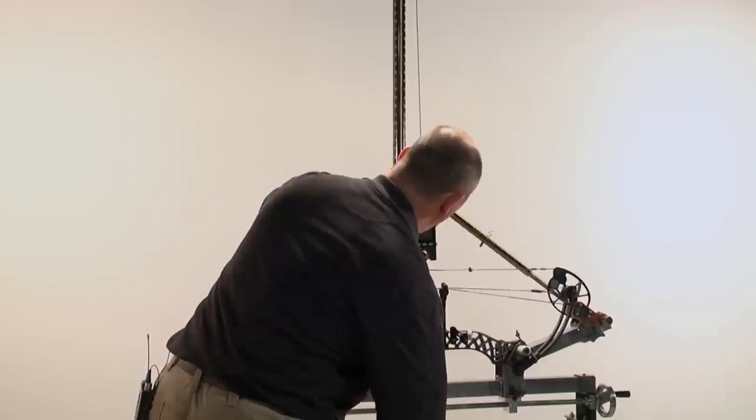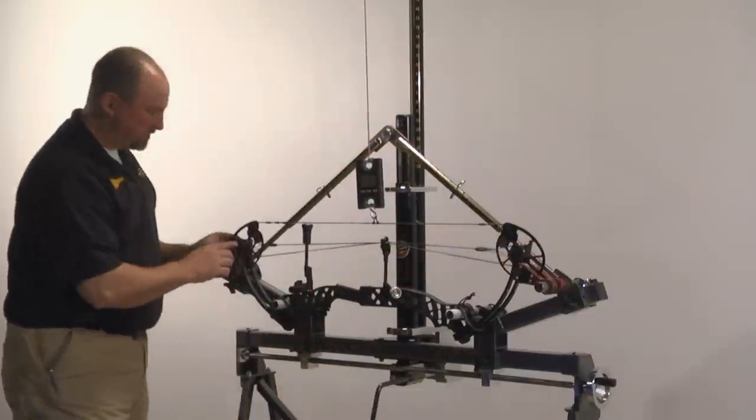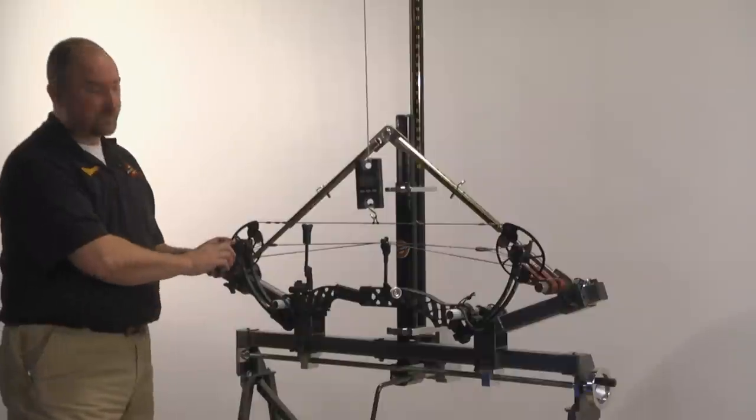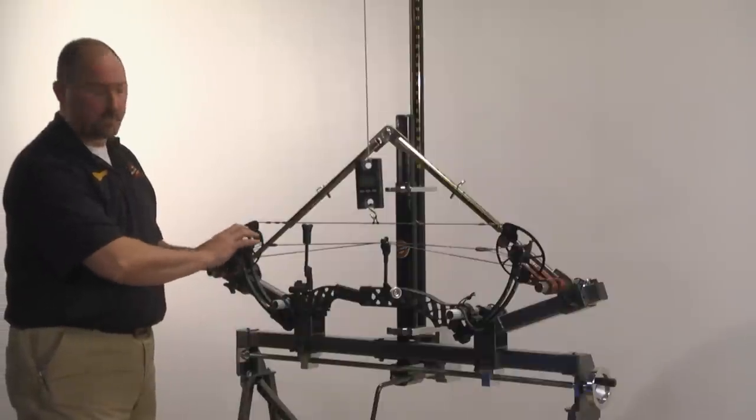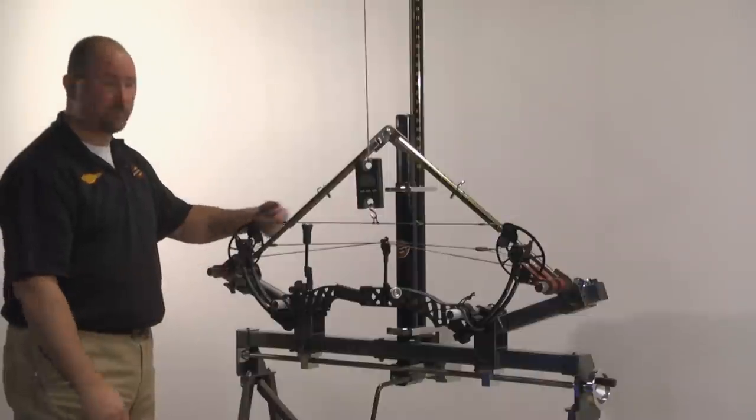Now one important point to consider when you're mounting your bow is you want to make sure that your limb stops are on the outside of the bow to allow for easy inspection when you're checking timing. If they're on the other side of the bow, it'll still be accomplished, but it's just harder to see.